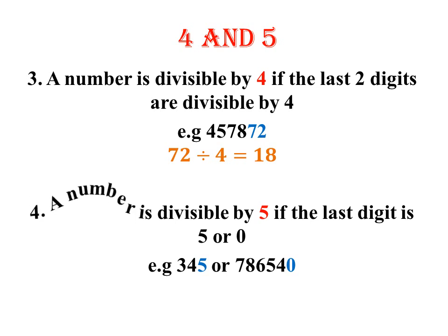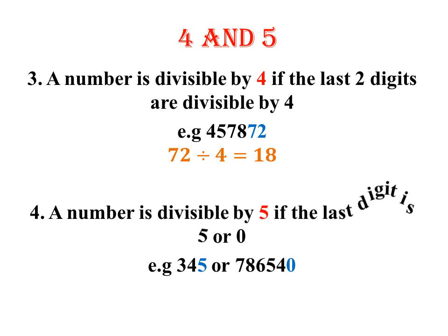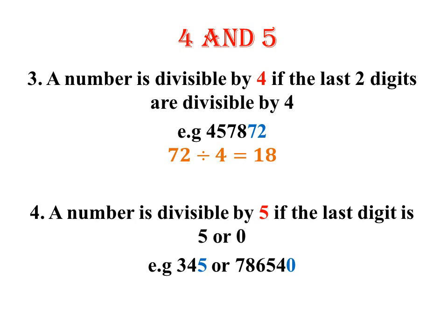A number is divisible by 5 if the last digit is 5 or 0. This one is simply check the last digit. Like in our example, the first one the last digit is 5, and the second one the last digit is 4. Therefore, all the two numbers are divisible by 5.